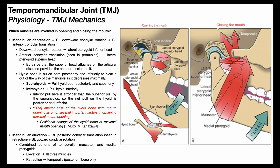Mandibular elevation is the major osteokinematic movement of mouth closing, which is an exact reversal of mouth opening. The early phase of closing involves bilateral posterior condylar translation with a little superior translation, and the late phase involves bilateral upward mandibular rotation. Of the four major mastication muscles, only the lateral pterygoids are involved in mandibular depression. Mandibular elevation requires the combined action of the other three muscles: the temporalis, the masseter, and the medial pterygoids.